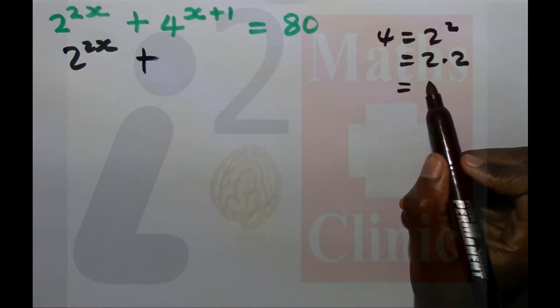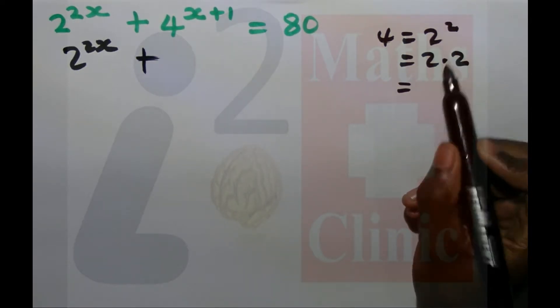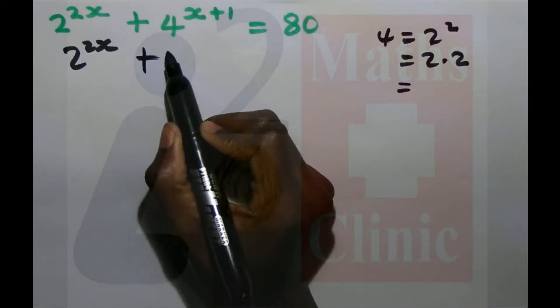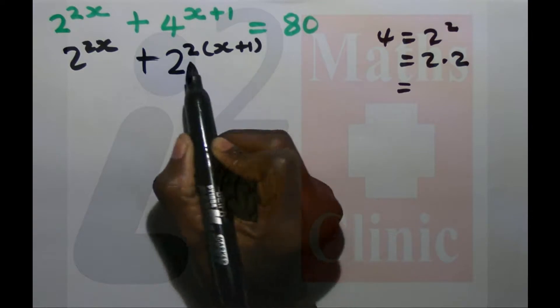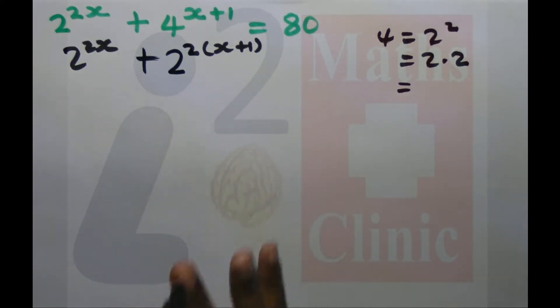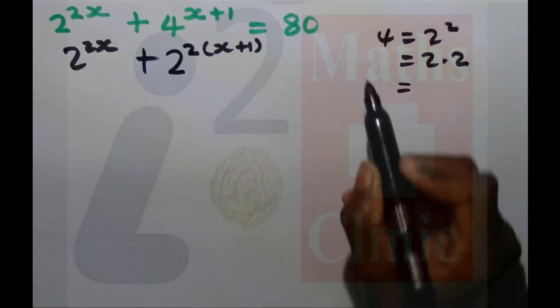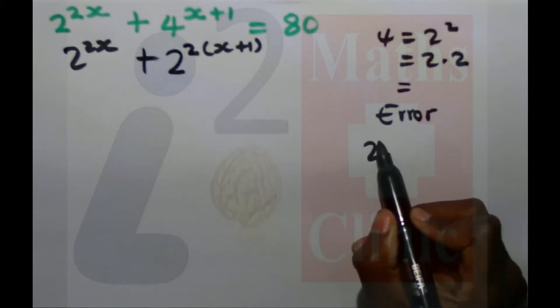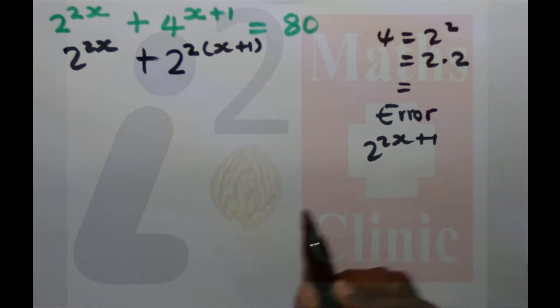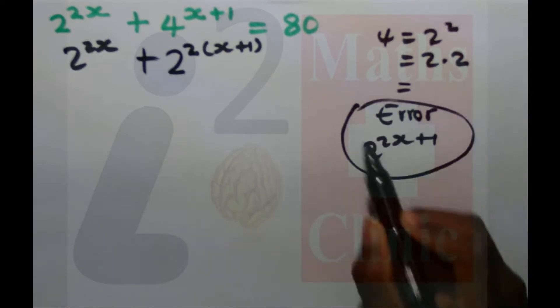So this is 2 to the 2 times (x plus 1). That's not x plus 1. The common error that students make - this is an error: 2 to the 2x plus 1.